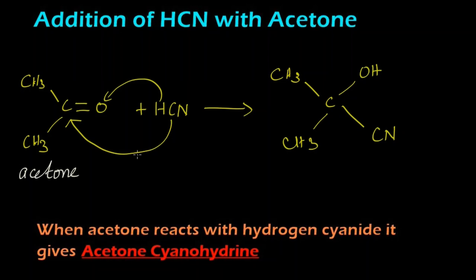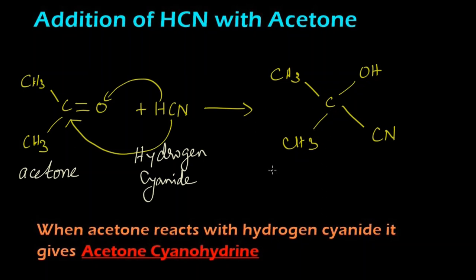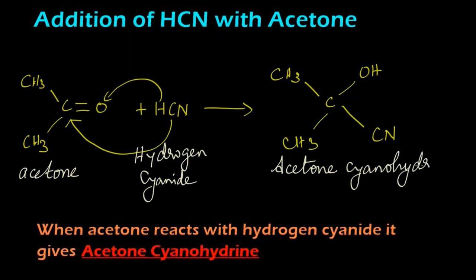Let's write the names for the structures. This is acetone, or else we can call it propanone. This is hydrogen cyanide. When acetone reacts with hydrogen cyanide it gives acetone cyanohydrin. Let's summarize: when acetone reacts with hydrogen cyanide it gives acetone cyanohydrin.